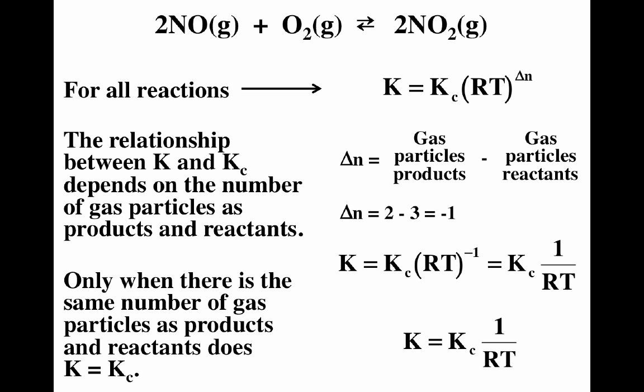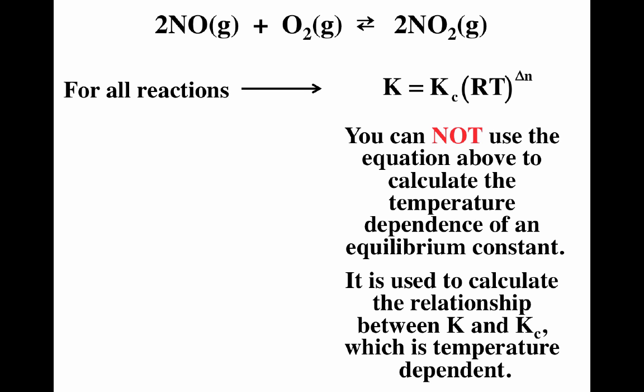Only when there's the same number of gas particles as products and reactants does K equal K sub C. If you have a different number of gas particles in products versus reactants, then K will not equal K sub C. Also note: you cannot use K equals K sub C times RT to the delta N to get the temperature dependence of equilibrium constants. It's simply that the relationship between K and K sub C depends on temperature — that's the only reason temperature appears in that equation.